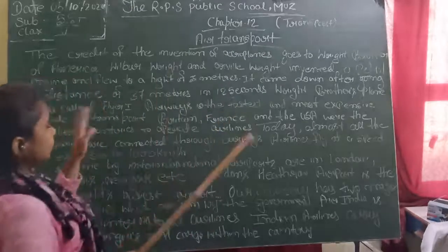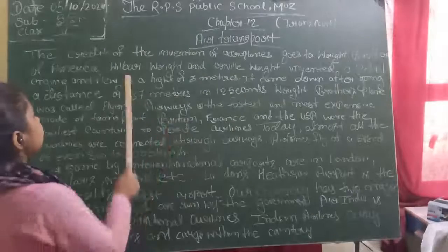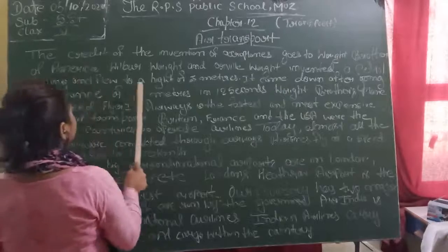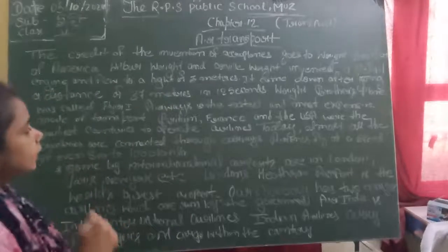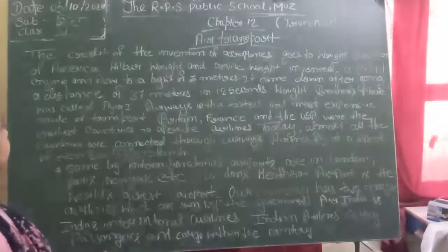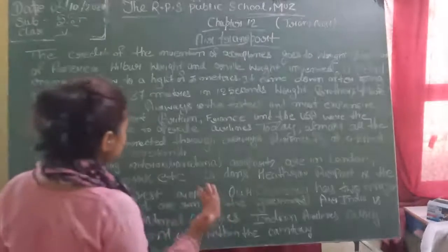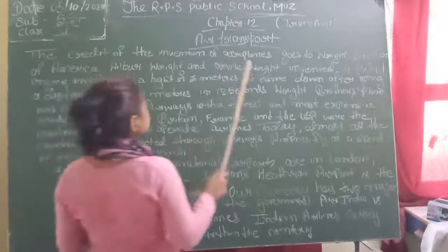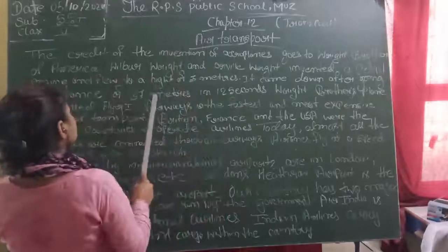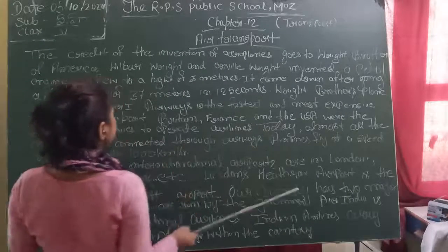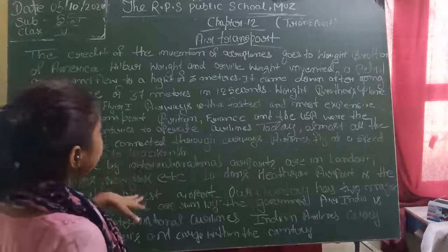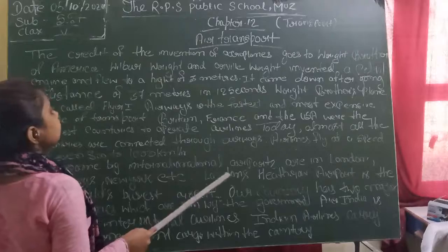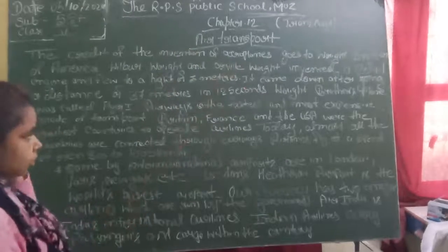Wilbur Wright and Orville Wright — the Wright Brothers — invented the petrol engine. They recorded that the engine took the aircraft 3 meters high and it covered a distance of 37 meters in about 12 seconds. It came down after reaching that height.